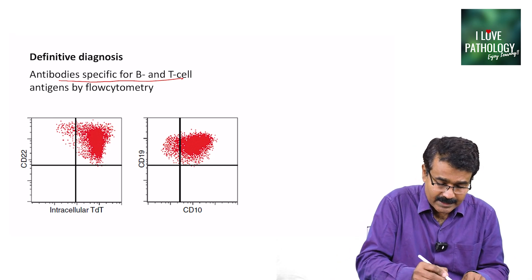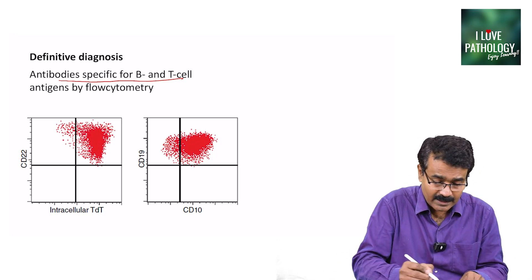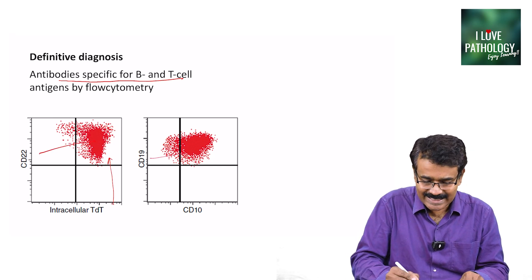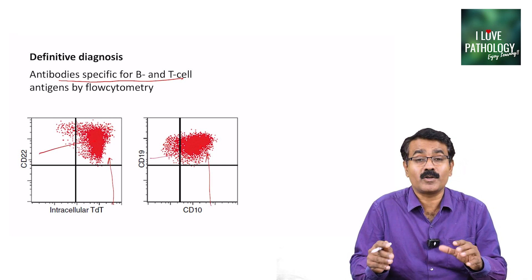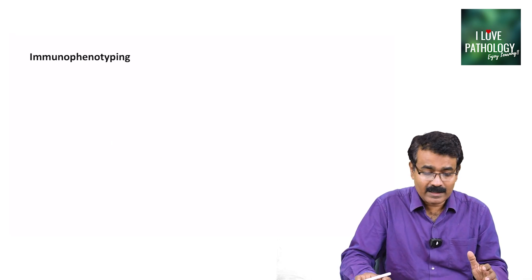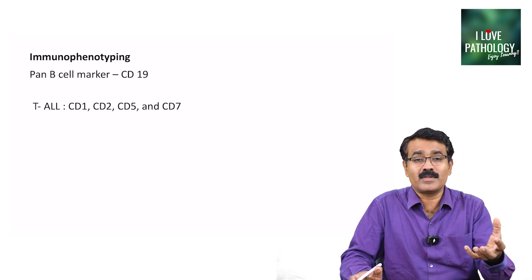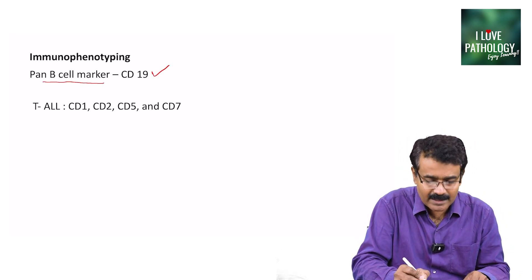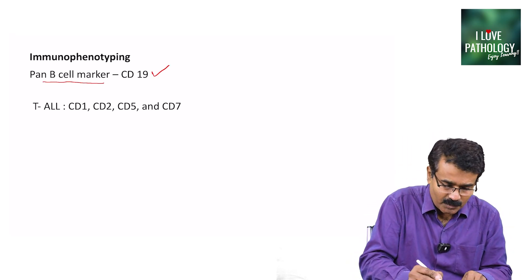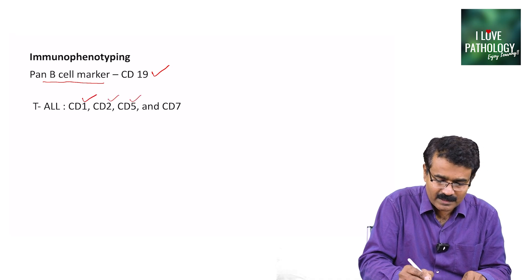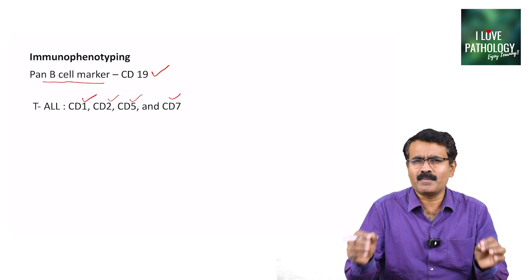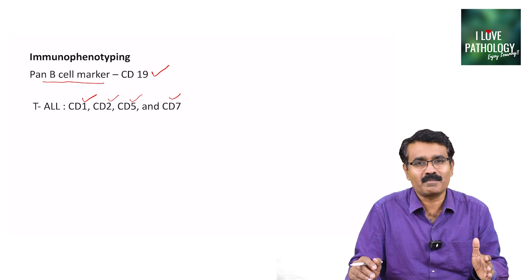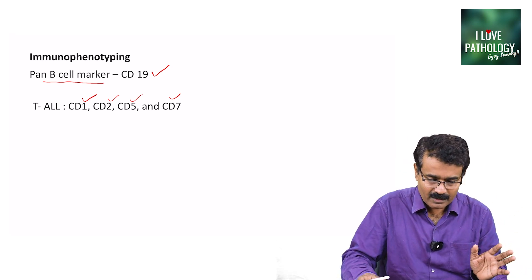In flow cytometry, for example, you can see positivity for CD22, TdT, CD19, and CD10, which means you are looking at a B cell neoplasm. Similarly, some tumors will be positive for pan-B cell markers. If it is B cell ALL, for example CD19; if it is T cell ALL, it is positive for CD1, CD2, CD5, and CD7. That is why it is important to differentiate B-ALL from T-ALL — this can only happen by means of immunophenotyping.